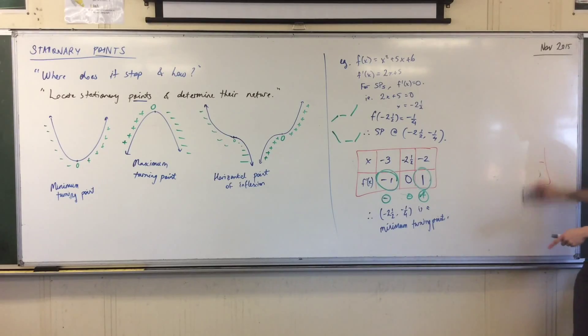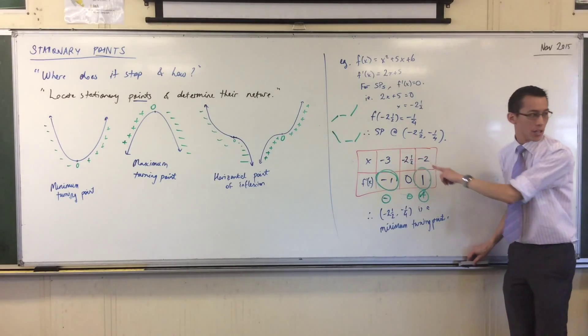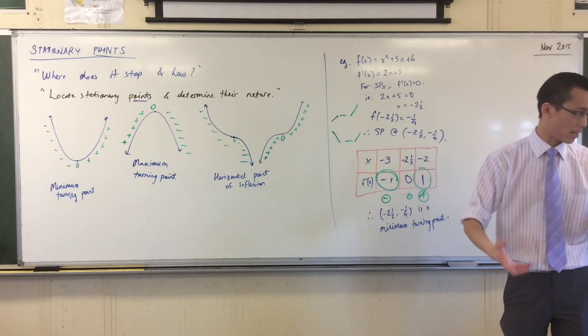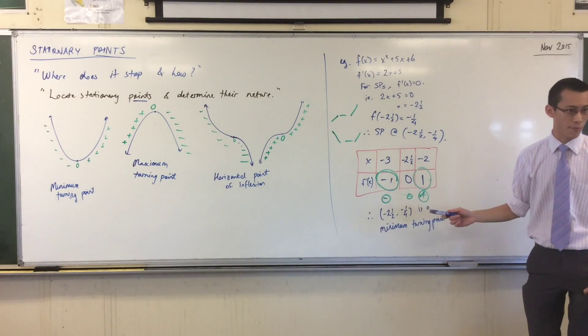We need to now think about, well, how do you choose these values here? Because I just sort of plucked out negative 2 and negative 3. Where did they come from?